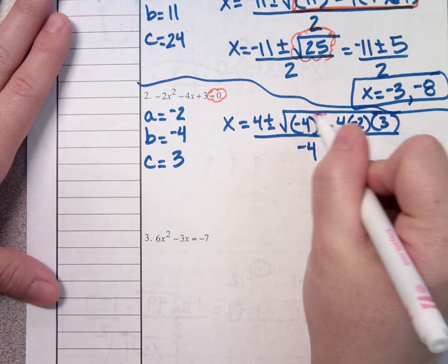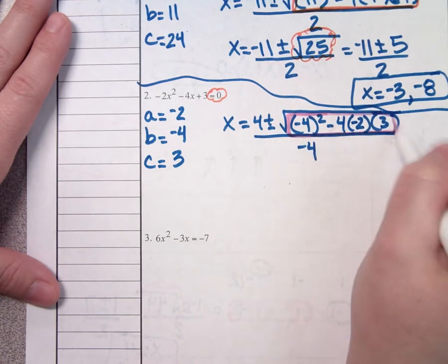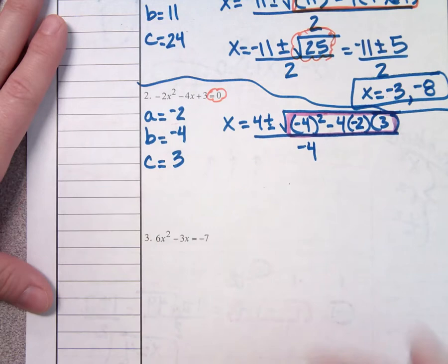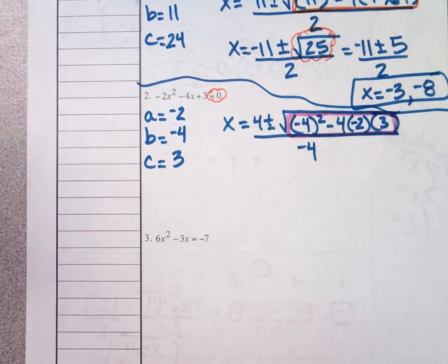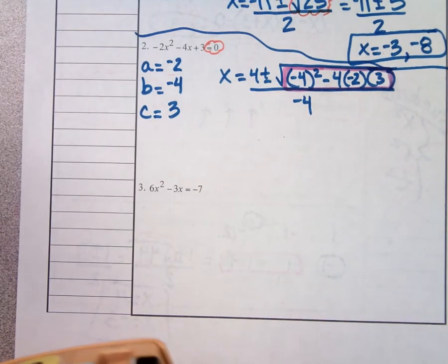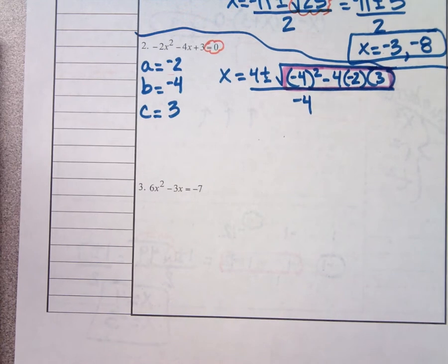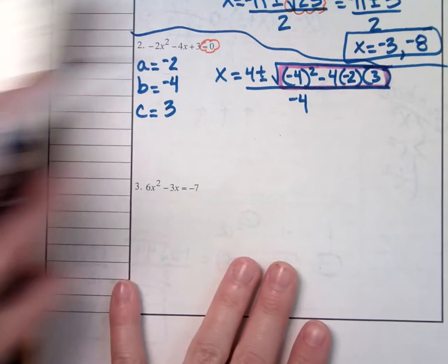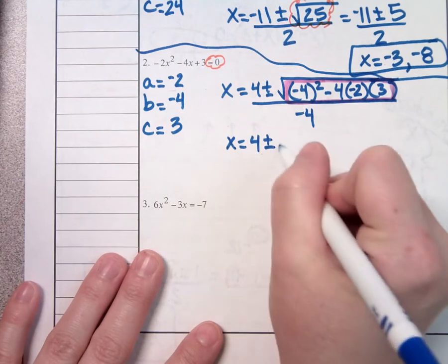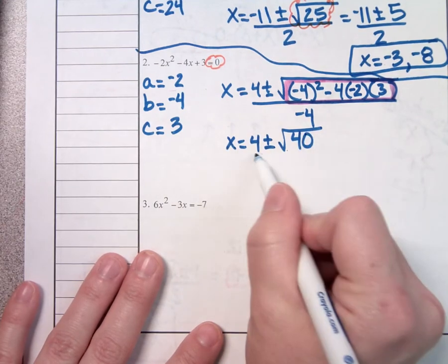Put everything under the square root into your calculator: negative 4 squared minus 4 times negative 2 times 3. You should get 40. So we have x equals 4, plus or minus square root of 40, all over negative 4. Can you take the square root of 40 and get something pretty? No. In Algebra 2, you'll learn to simplify — you'd get 4 plus or minus 2 root 10, all over negative 4. For now, I'll leave it like this.